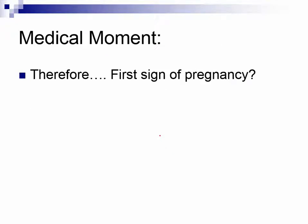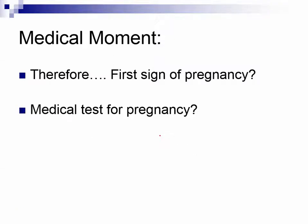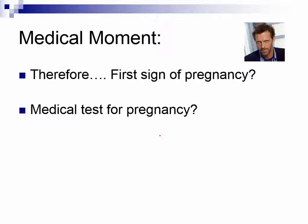Let's take a medical moment. What's the first sign of pregnancy, and what's the medical test for pregnancy? The first sign of pregnancy is when the endometrium fails to slough off the uterus — what we call a missed period. When a woman first starts to suspect she's pregnant is when she misses her period. The medical test is the presence of HCG in the blood or the urine.